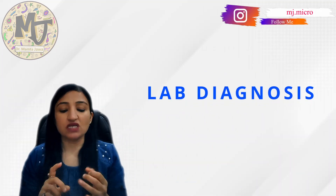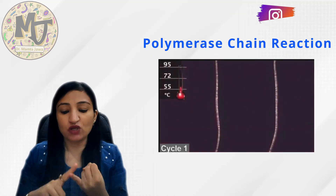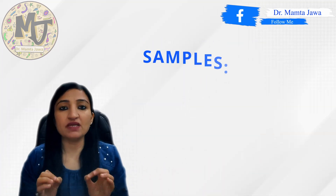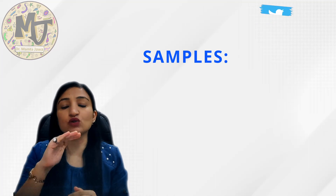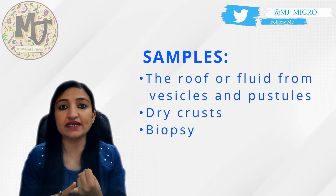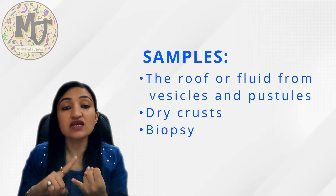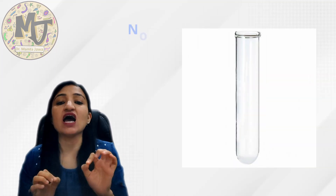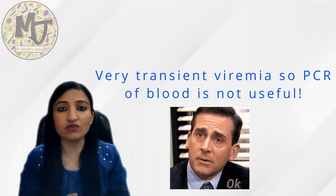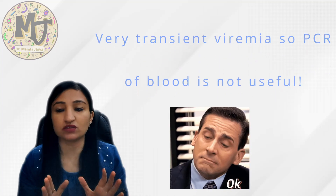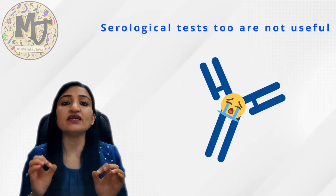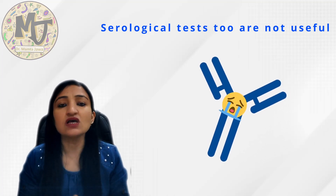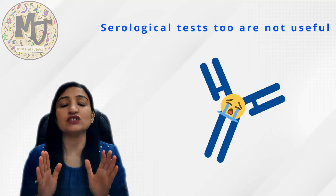For lab diagnosis of monkeypox, the best method is polymerase chain reaction because of its high sensitivity and accuracy. Appropriate samples include those from skin lesions — the roof and fluid from vesicular lesions, samples from pustules, or dry crusts; biopsy can also be taken where feasible. Lesion samples should be kept in a sterile dry tube — without viral transport medium — and kept cold. PCR of a blood sample is usually not very informative because the duration of viremia in this disease is very short.